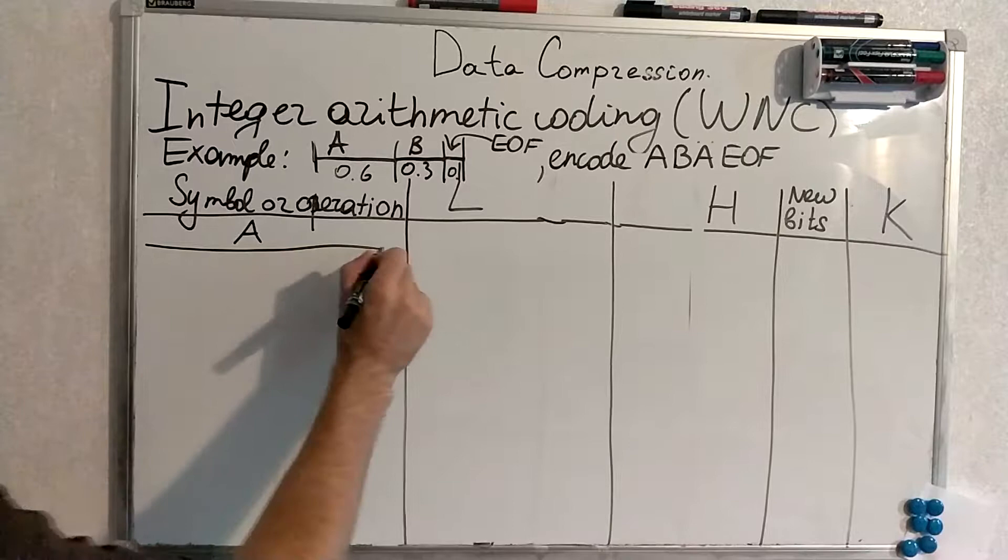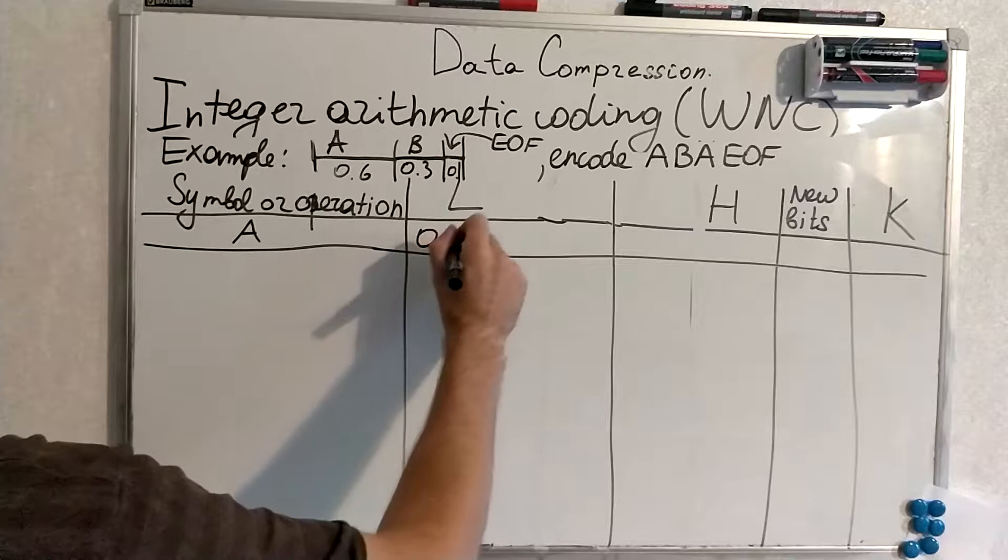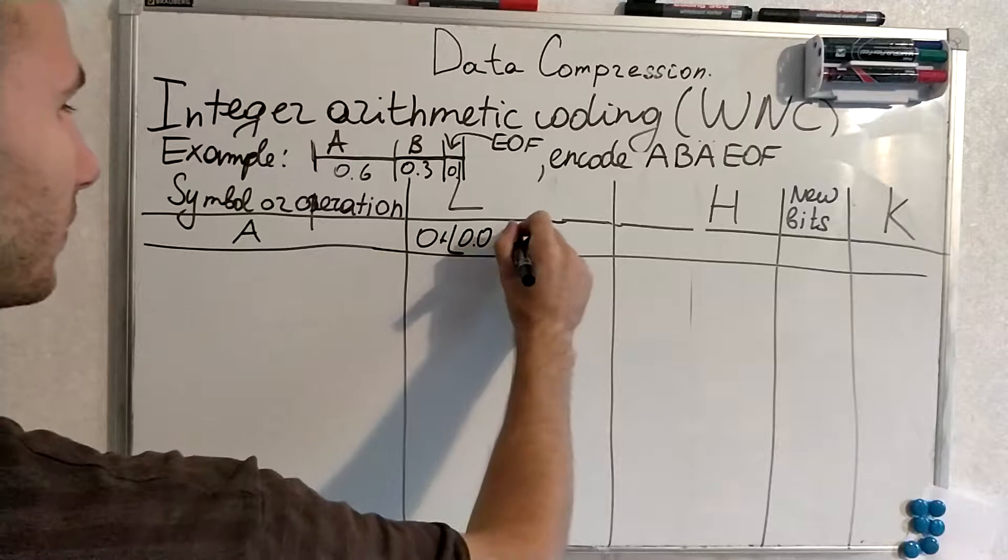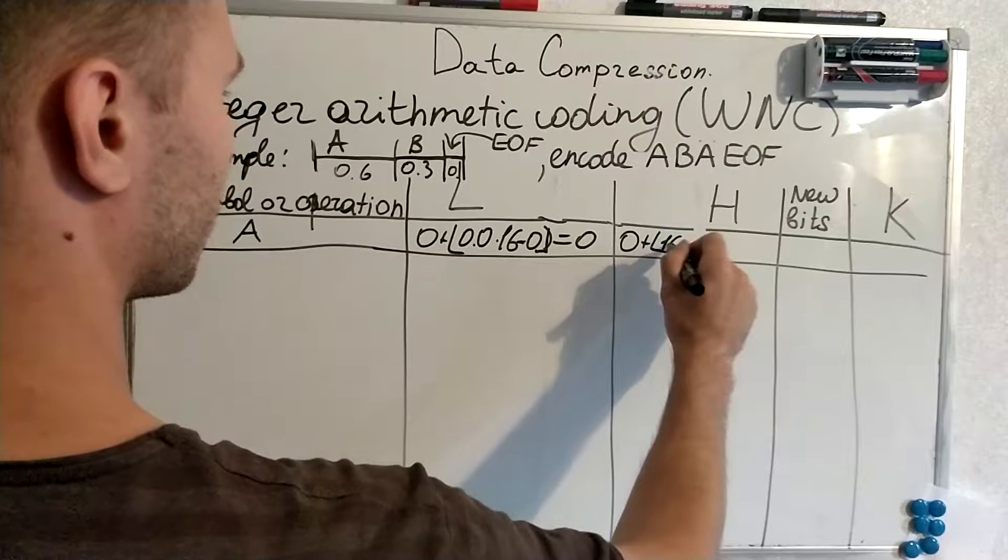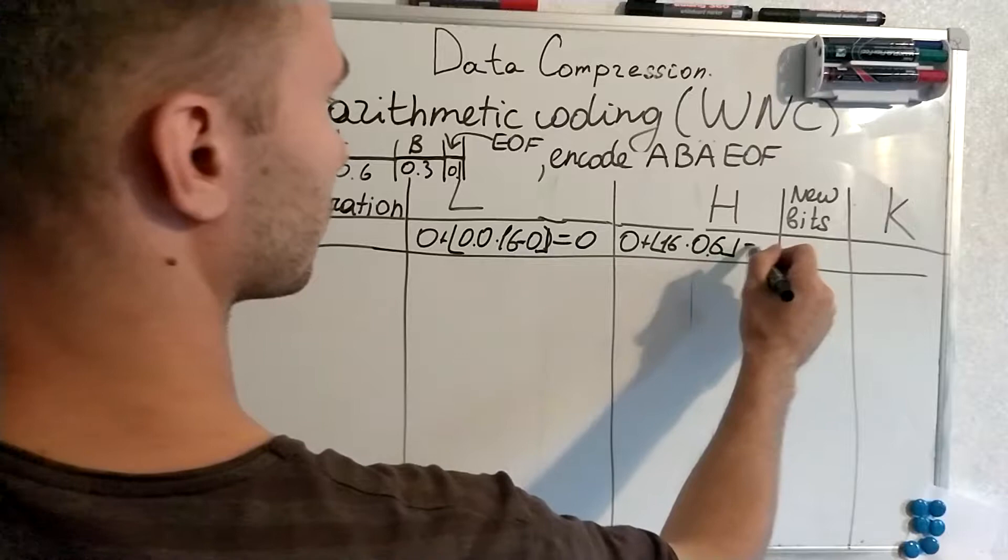Thus we produce 0 plus according to the formula. This is nothing but working according to the formula. This will become 0.